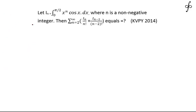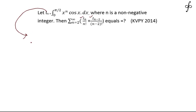Now to start with, since in the equation there is a relation between I_n and I_{n-2}, we can naturally plan to find the reduction formula for this particular integral. So we will use integration by parts.